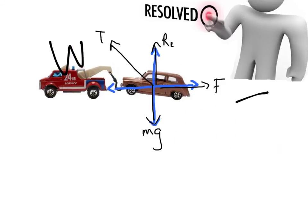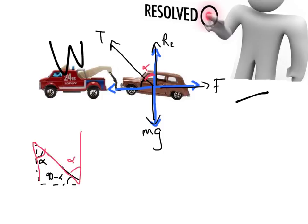Now let's look at the car. The problem force here is the tension in the tow bar going up. If the tow bar is at angle alpha to the top of the truck, then this angle down here is 90 minus alpha, making this angle here also alpha — you may know these as Z angles. So this is my adjacent force — T cos alpha — and the other one is T sine alpha. That T has been resolved.